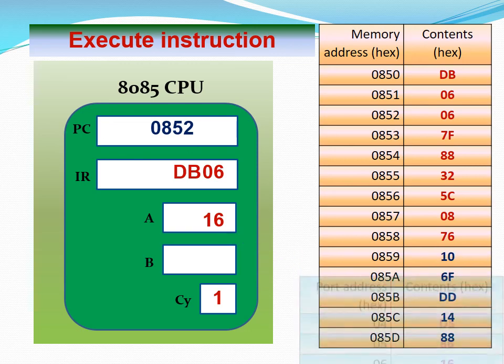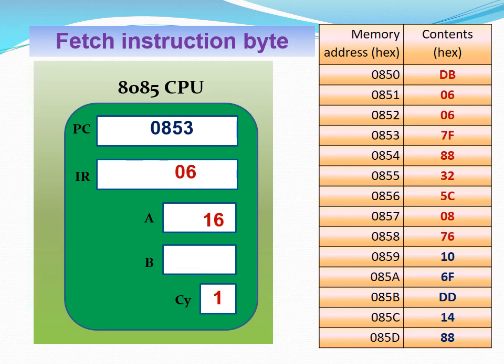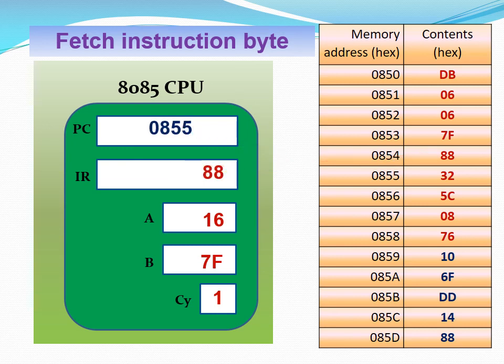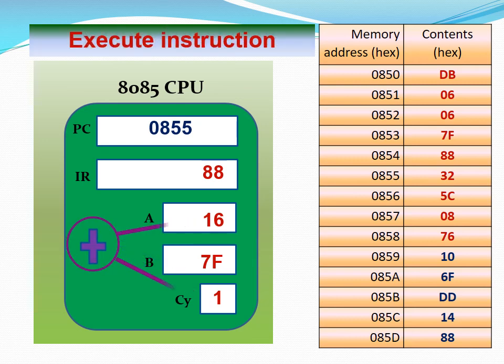We fetch the next instruction, which indicates it requires another byte, so we fetch the next byte as well. We now have a full instruction and execute it — loading the value 7F into register B. The value 7F comes from part of the value in the instruction register. We then fetch the next instruction at address 0854, which is a single-byte instruction. This is an AND with carry operation affecting register A and the carry flag — the carry is cleared because there is no carry out.